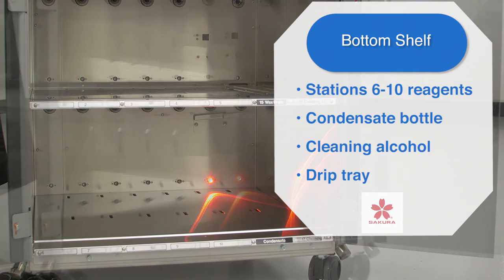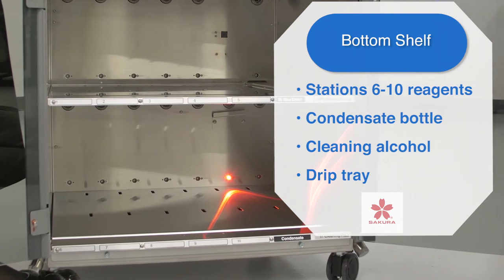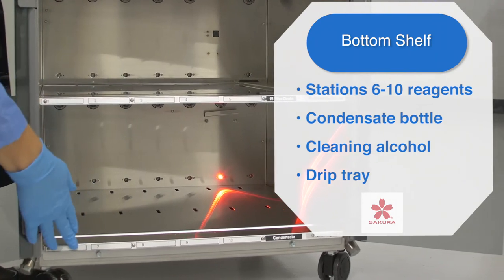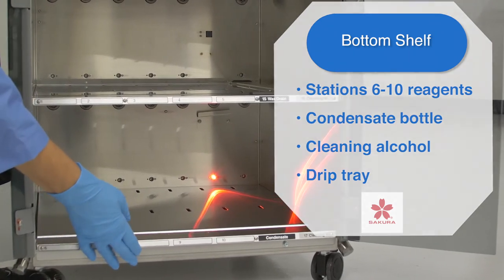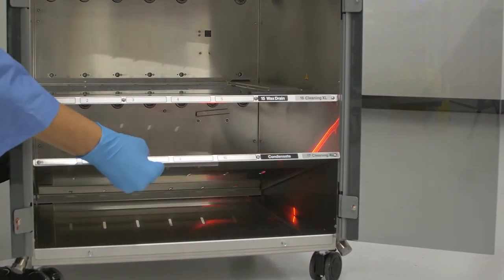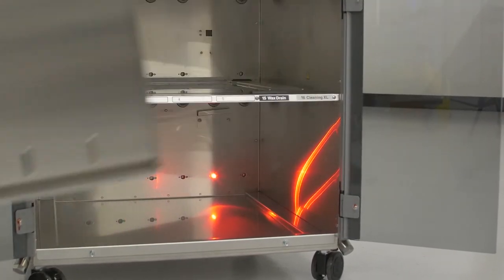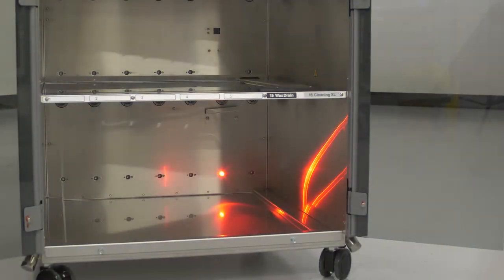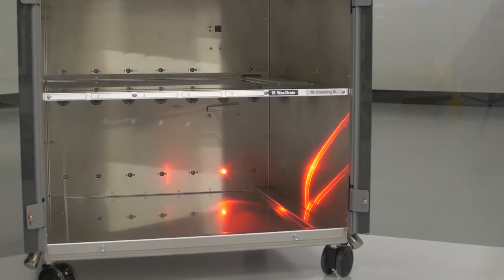The bottom shelf also contains the condensate bottle and cleaning alcohol station. There is also a drip tray below the bottom shelf. To access the drip tray, the bottom tray must be lifted. This drip tray has the capacity to hold up to 2.7 liters of reagent. It should be checked periodically and cleaned.